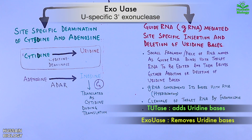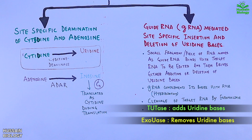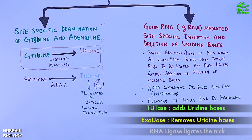After cleavage, TUTase — that's terminal uridine transferase enzyme — adds uridine bases to the target RNA. In case of deletion, exoUase — that's U-specific 3' exonuclease enzyme — removes uridine bases from the RNA molecule, thus editing it. Then the nick is ligated by RNA ligase enzyme.